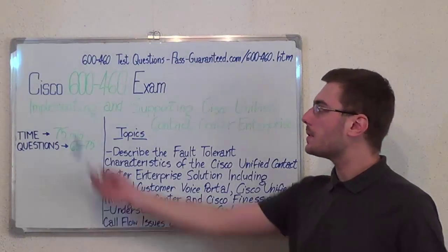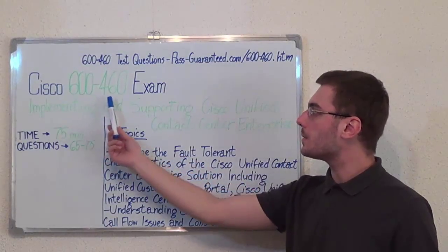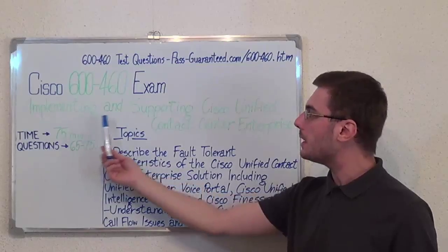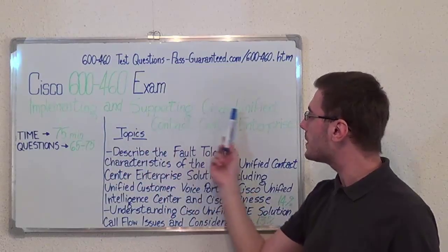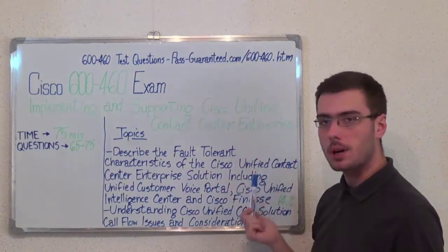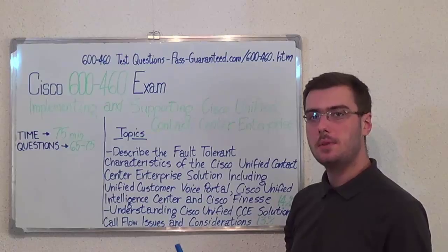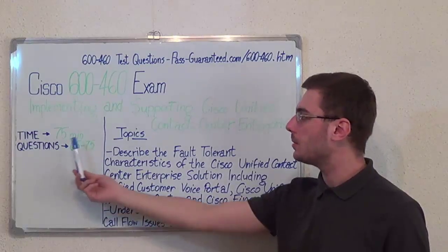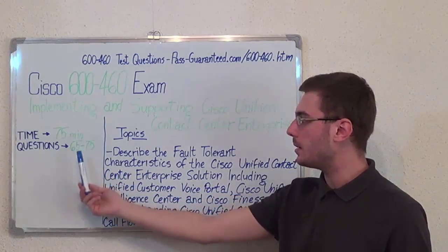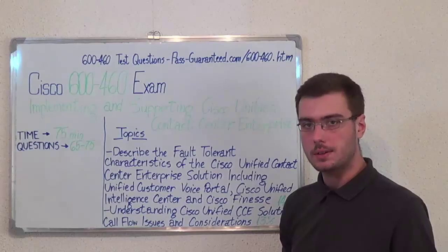Hello everyone, today I will present you the Cisco 600-460 Exam, Implementing and Supporting Cisco Unified Contact Center Enterprise. Here we have some basic test information. The duration of this exam is 75 minutes and there are between 65 to 75 questions.